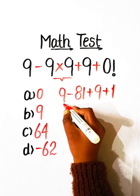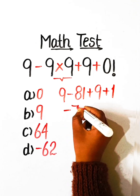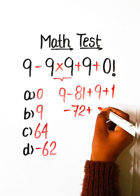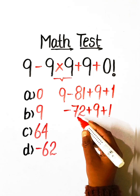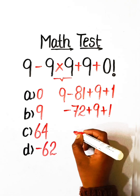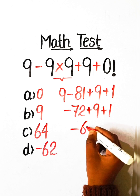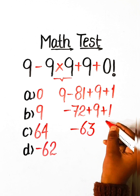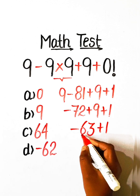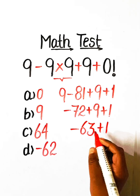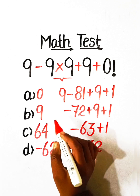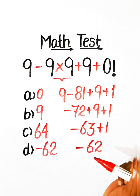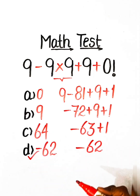9 minus 81 is minus 72, plus 9 plus 1. Minus 72 plus 9 is minus 63, plus 1 equals minus 62. In the options we have Option D: minus 62, so Option D will be our correct answer.